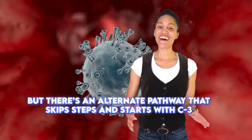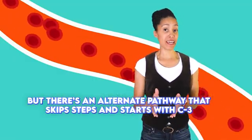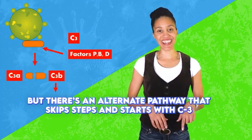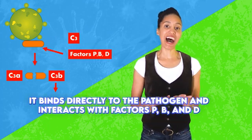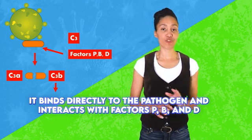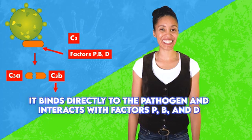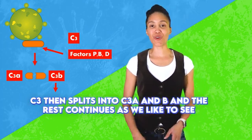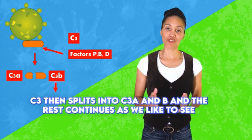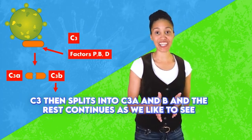But there's an alternate pathway that skips steps and starts with C3. It binds directly to the pathogen and interacts with factors P, B, and D. C3 then splits into C3A and B, and the rest continues as we like to see.